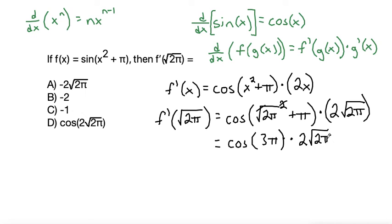From here, what is cosine of 3 pi? Well, let's do a little sketch of our unit circle. Remember that cosine is the x coordinate on the unit circle. So we're going to go around our unit circle. This would be up to 2 pi, and then going around a half more times makes 3 pi. So we're going to finish right here.